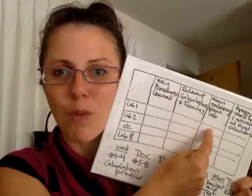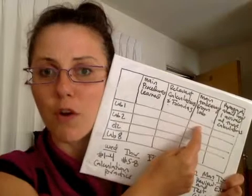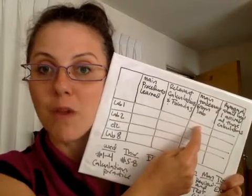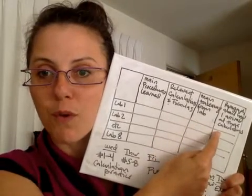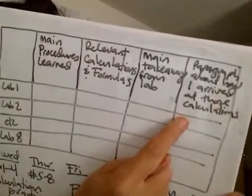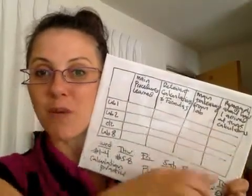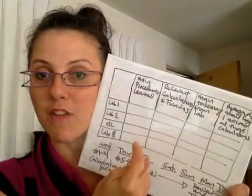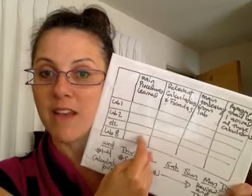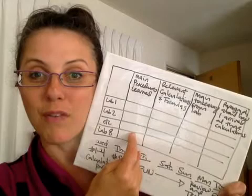Then over here, what are the main takeaways from the lab? The two or three big ideas her teacher wanted her to know, which is why they had her do the lab in the first place. And then finally — I don't know if you can read my handwriting here — a paragraph about how she arrived at those calculations, to make sure she understood all of the processes. So if she reads through each of her labs and fills in the chart for labs one through eight, she will probably have a complete understanding of everything her teacher wanted her to know.